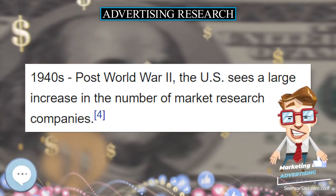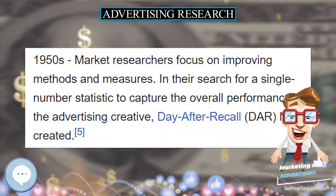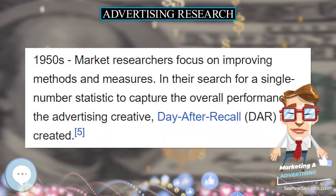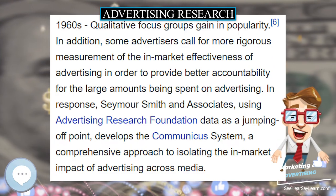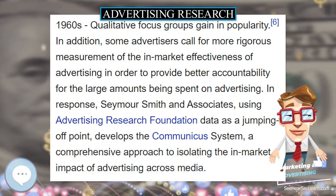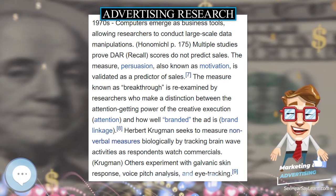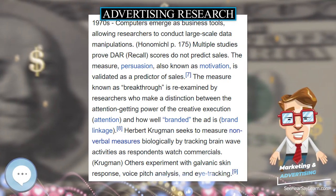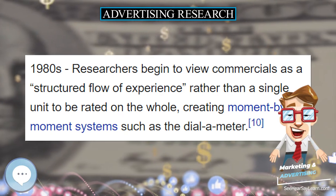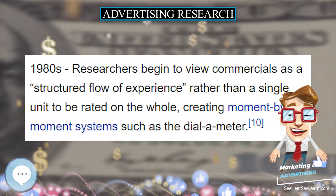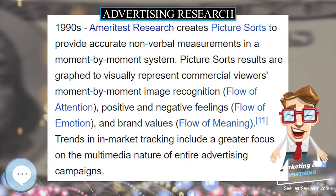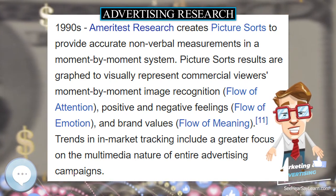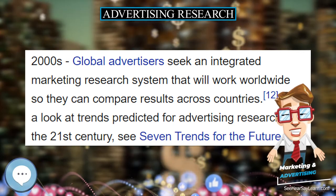In the 1960s, qualitative focus groups gain in popularity. In addition, some advertisers call for more rigorous measurement of the in-market effectiveness of advertising in order to provide better accountability for the large amounts being spent. In response, Seymour Smith & Associates, using Advertising Research Foundation data as a jumping-off point, develops the communicus system, a comprehensive approach to isolating the in-market impact of advertising across media.